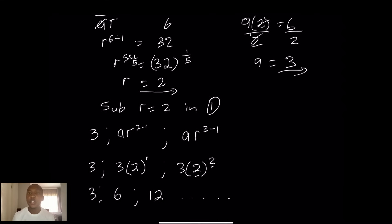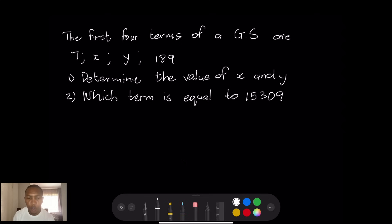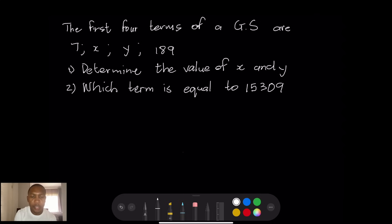Let's quickly move into another example and wrap up the lesson. The first four terms of a geometric sequence are 7, X, Y, and 189. We want to determine the values of X and Y. We already know a equals 7.